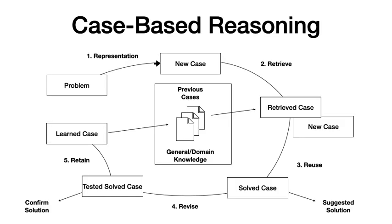For those unfamiliar with case-based reasoning, it uses solutions to past problems to find solutions for new similar problems. First, you find a suitable representation so the problem takes the form of a case. Then you retrieve similar cases from previously stored cases in the case base — these are past problems with known solutions. You then reuse those solutions to come up with a solution for the new case.